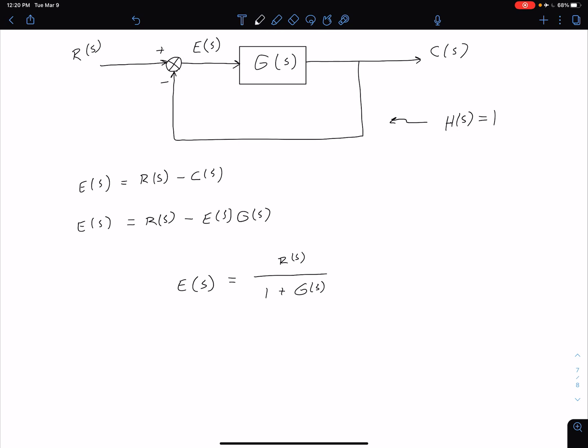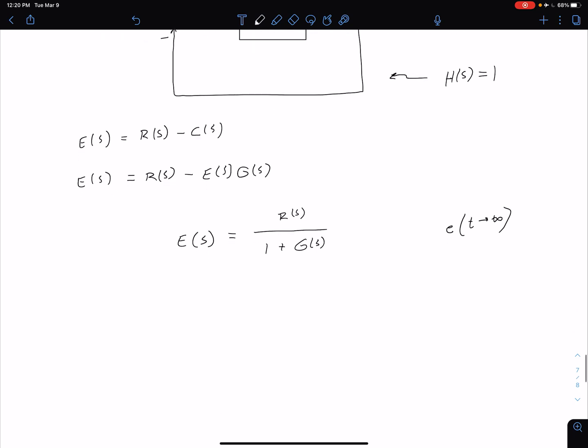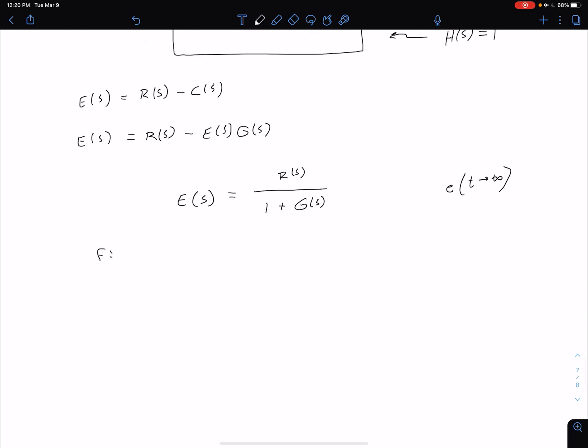What we're interested in for steady state error is we want E as T is going towards infinity, so we want E in our time domain. Remember what we're going to use to get that is our final value theorem.